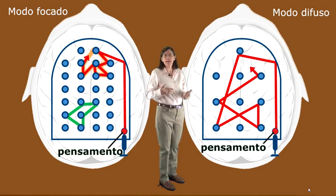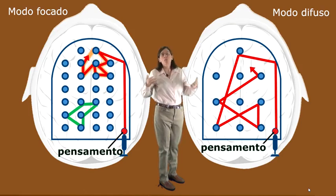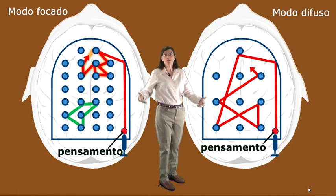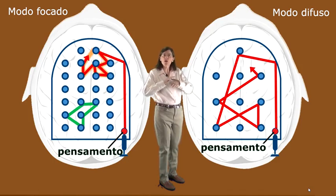In this diffuse mode of thinking, you can look at things broadly from a very different big picture perspective. You can make new neural connections traveling along new pathways.